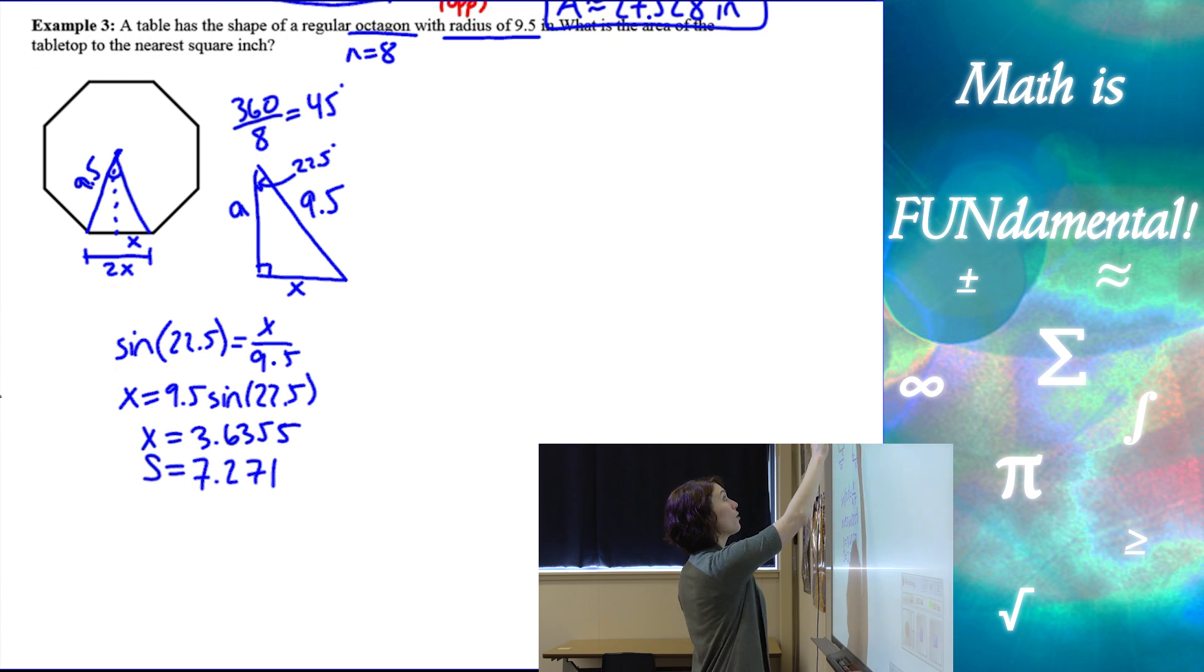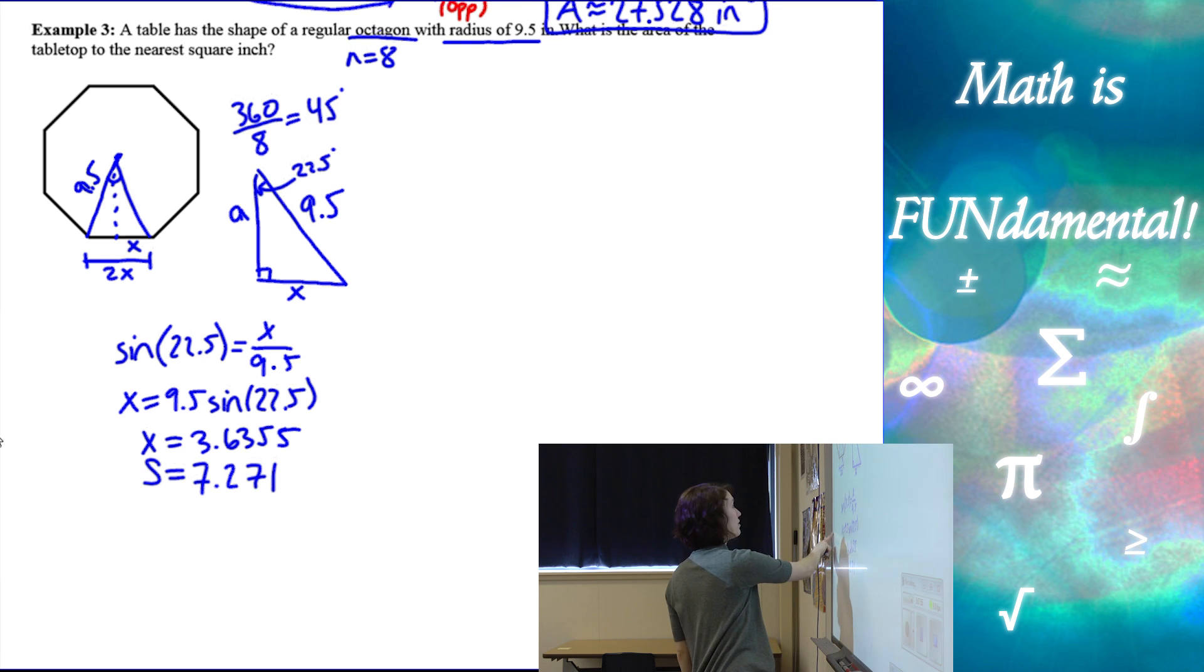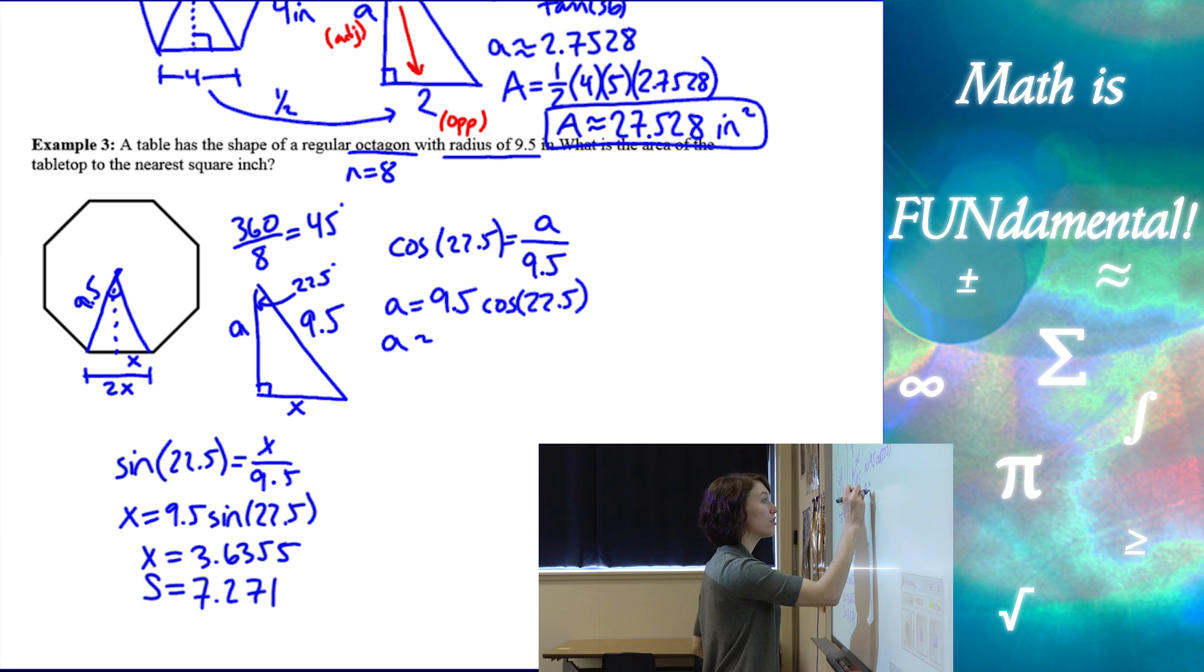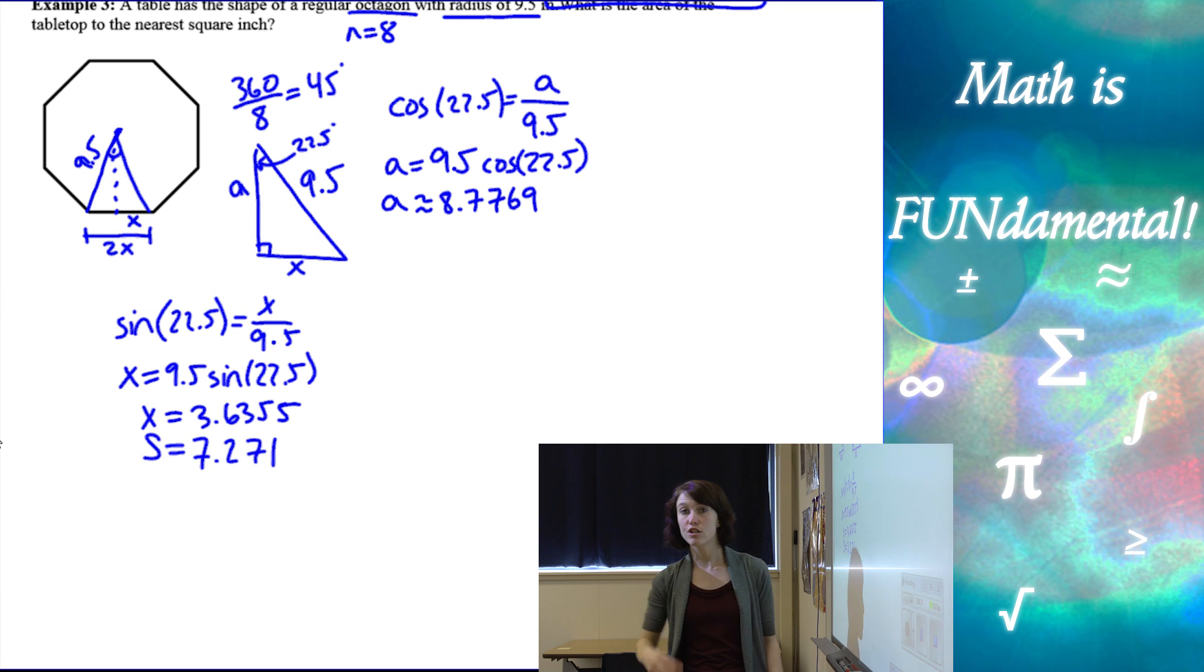Now let's find the apothem. So coming back to the 22.5 degrees and using the 9.5 again, we don't really want to use x because we had to round. So using the 9.5, I'm going to use cosine. So we do cosine of 22.5 equals adjacent, which is my apothem over hypotenuse, 9.5. We multiply and we have apothem equals 9.5 times the cosine of 22.5, which is going to be approximately 8.7769.